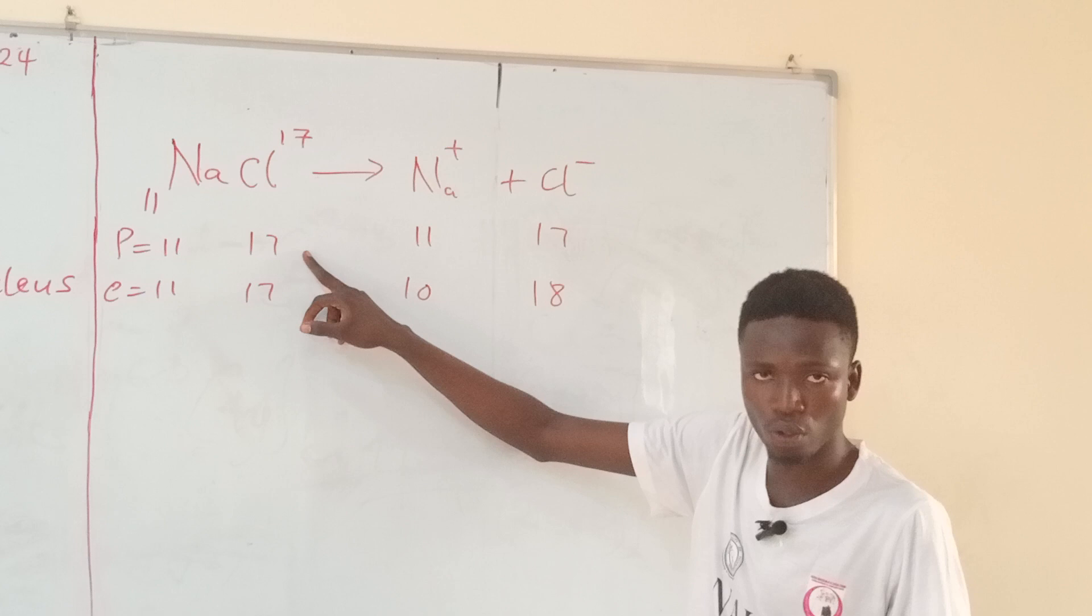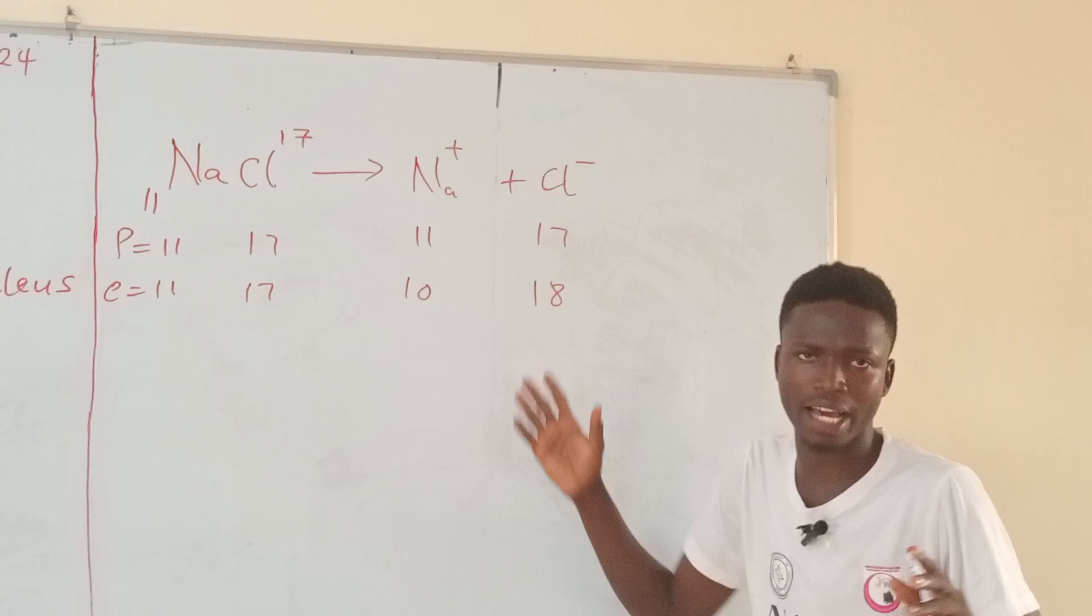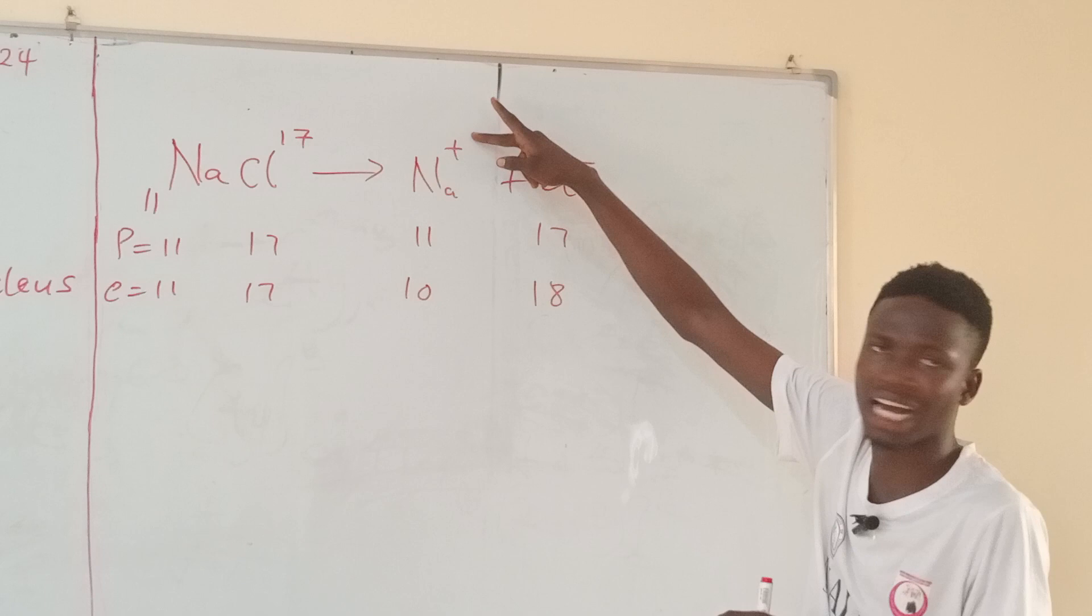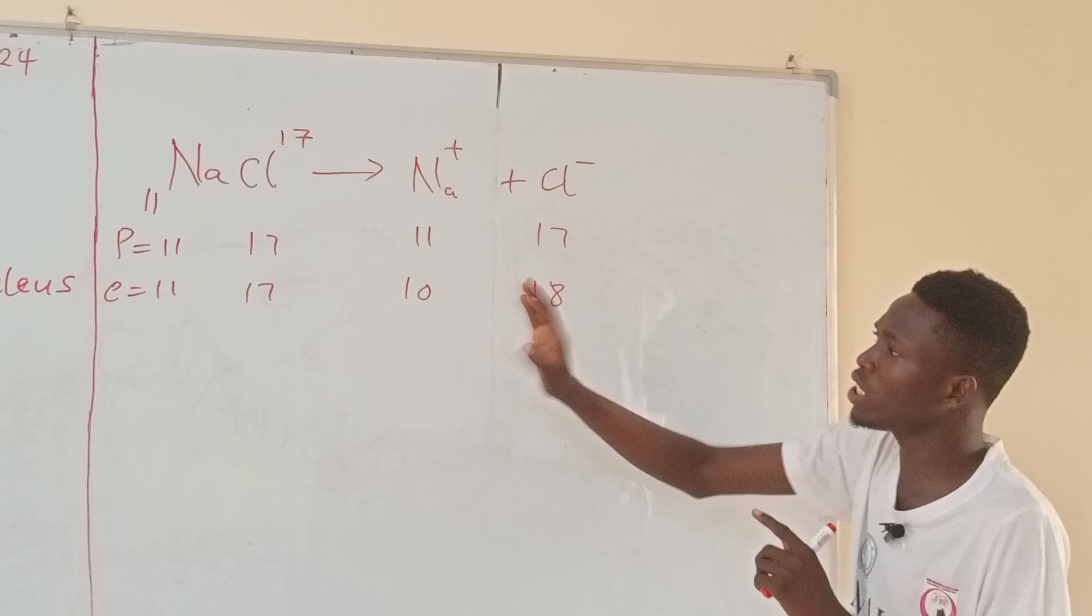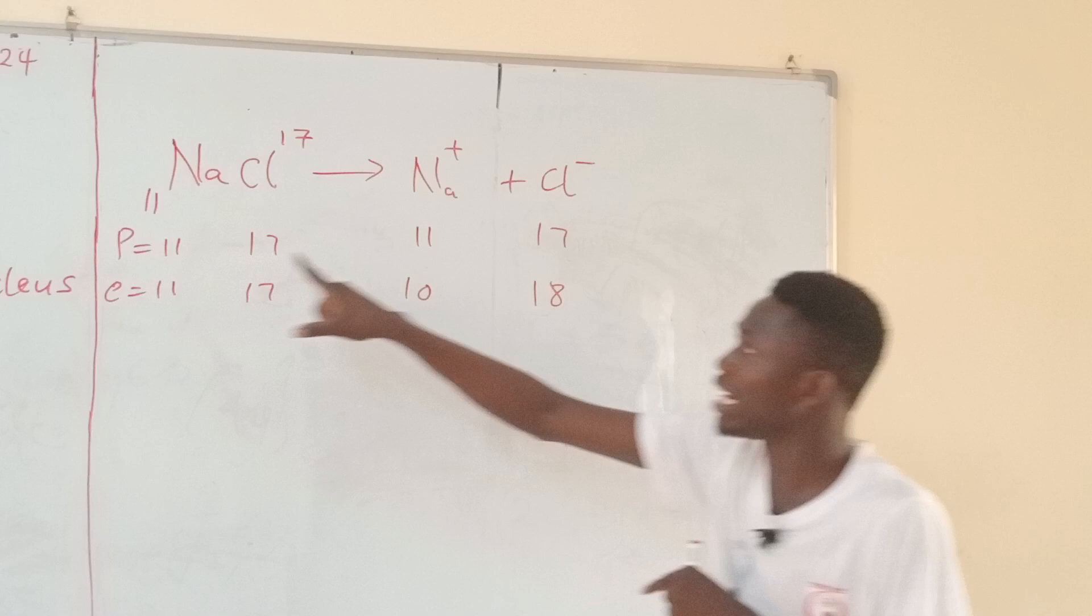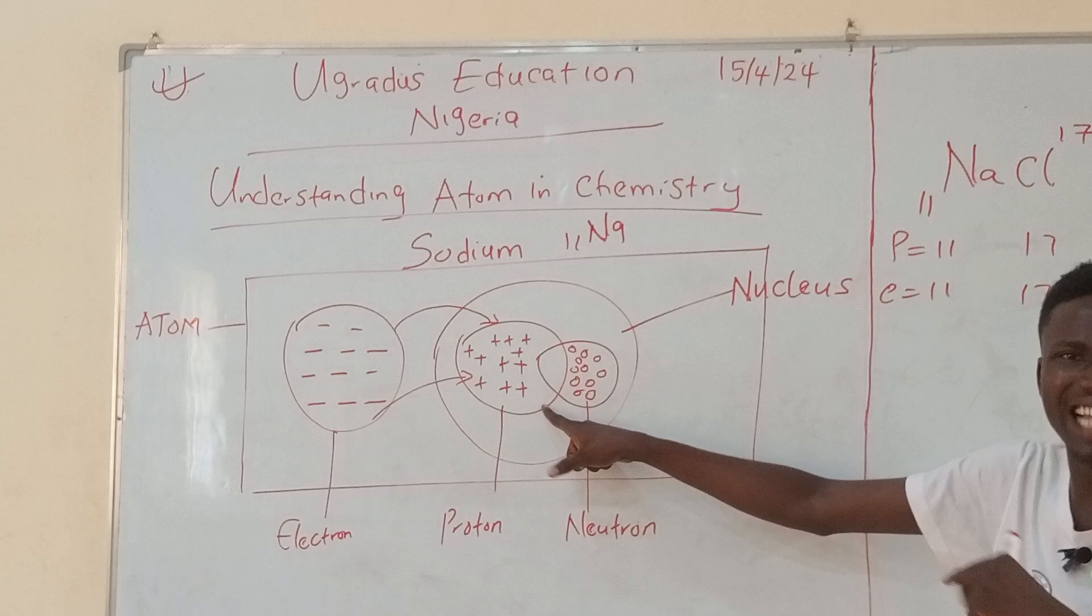And when they now ionize, they break up because of bonding and interaction. Sodium now carries positive charge, and chlorine carries negative charge. What happens? You will notice that in my illustration, I did not change the number of protons. The proton number of sodium here is 11, and here is also 11. Why? Because I said that proton is not free in the atom. It is enclosed.